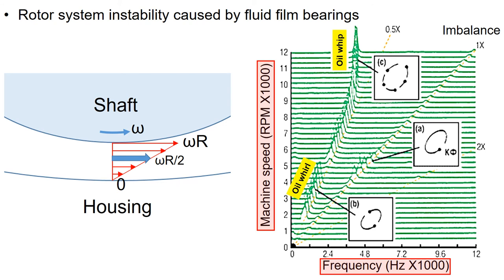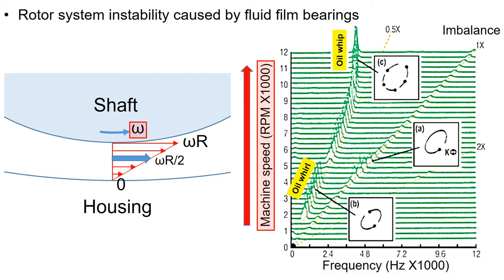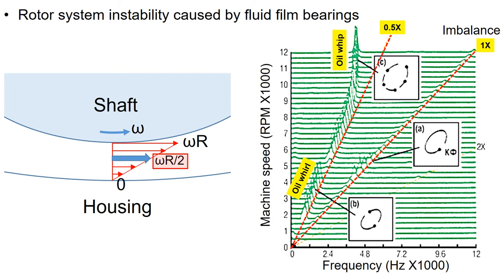Here is an example of how the vibration signals would look in a waterfall plot. The x-axis is the frequency and the y-axis is the machine speed. With increasing rotating speed omega, the 1x vibration due to imbalance will also track the machine rotating speed as shown in the figure. The sub-synchronous vibration, slightly less than 0.5x, is due to fluid forces generated by the fluid spinning inside the bearing. If the sub-synchronous frequency equals the rotor's first critical speed, then the mechanism transitions from oil whirl to oil whip. Oil whip is a much more severe condition, in which the energy from the sub-synchronous vibration excites the first bending mode of the rotor.